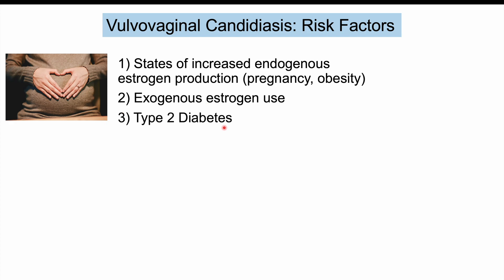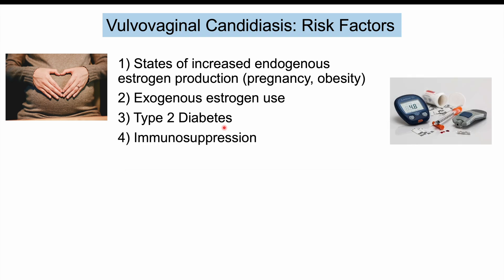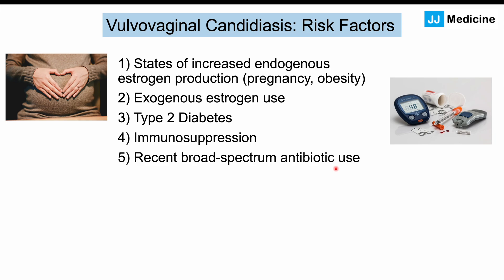Having type 2 diabetes is a risk factor due to immunocompromise. Immunosuppression in general — any condition or medication causing immunosuppression, including HIV or AIDS — increases the risk. Recent broad-spectrum antibiotic use can destroy beneficial bacteria within the vaginal cavity, increasing the likelihood that candida can take over.